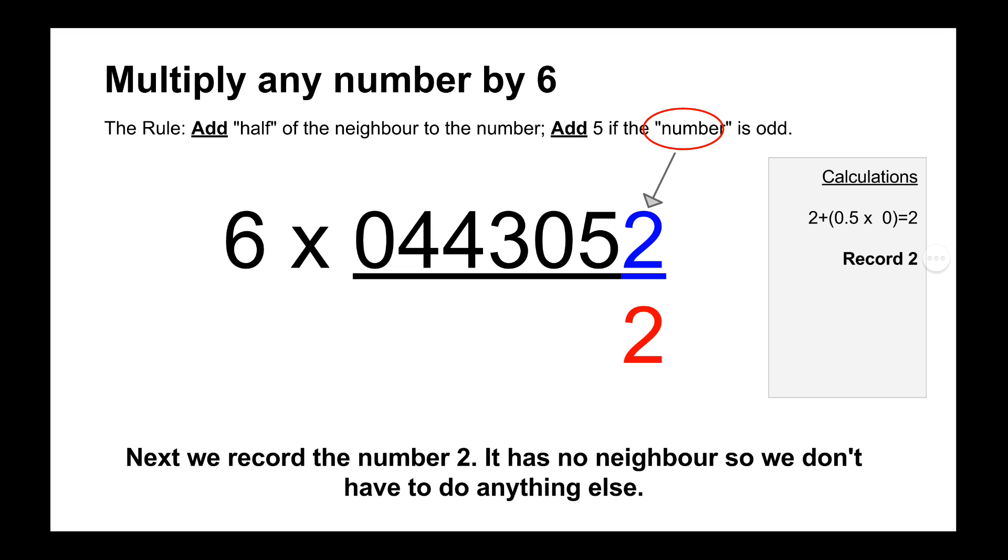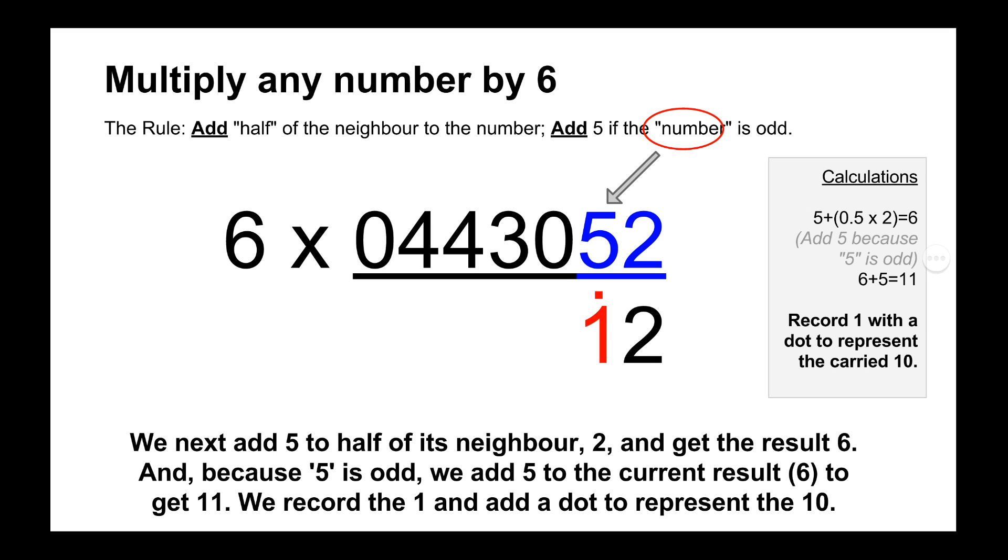And then we deal with the first digit, which is 2. It's an even digit and it doesn't have a neighbour. So we simply record down 2. And the next digit is 5. So we do half of the neighbour. So half of its neighbour 2 is 1. And we add that on to 5 to get 6. And then we add 5 because the number 5 is odd. So if you have a look on the right-hand side, you can see the calculations that carry out. So 5 plus 0.5 times 2 equals 6. And add 5 because the digit 5 is odd. So 6 plus 5 equals 11. So we record the 1 and add a dot above it to represent the carry 10.